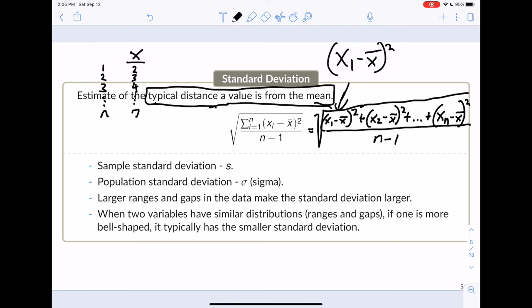In the sample, we represent the standard deviation as S. In the population, we represent it as sigma. And as a reminder, S then is going to be a statistic. Sigma is going to be a parameter. S can change from sample to sample. Sigma cannot change from sample to sample because sigma is the parameter that we don't know. We're always going to use the sample standard deviation to estimate the population standard deviation.